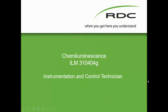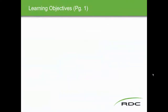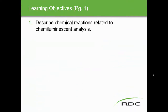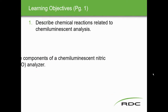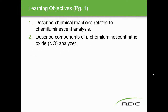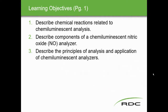Learning objectives for this module: describe chemical reactions related to chemiluminescent analyzers; describe the components of a chemiluminescent nitric oxide (NO) analyzer; and describe the principle of analysis and application of chemiluminescent analyzers.